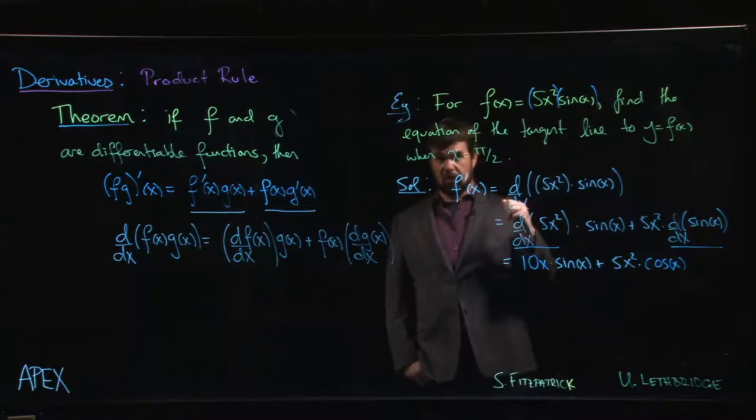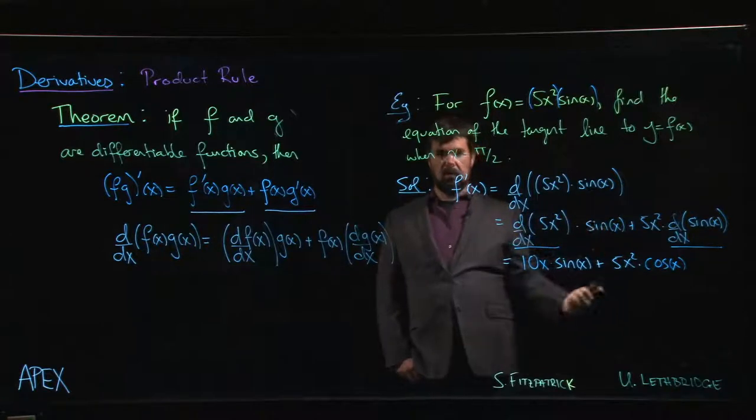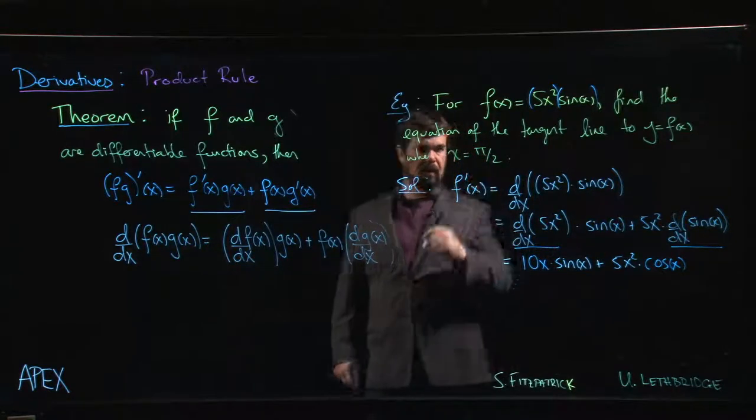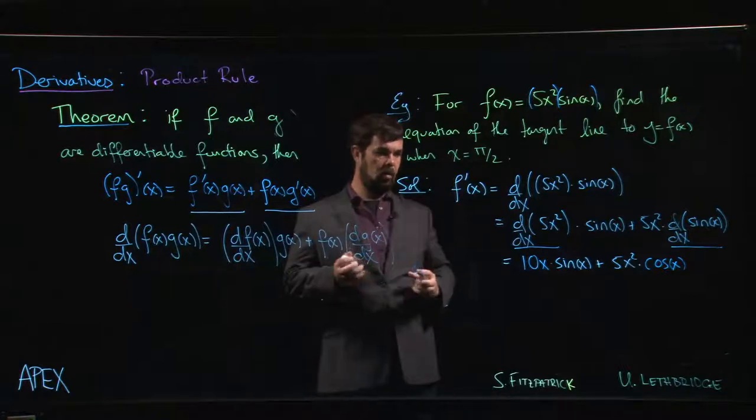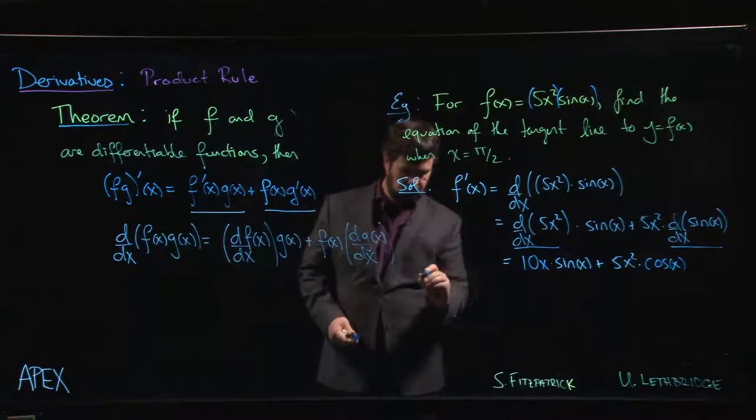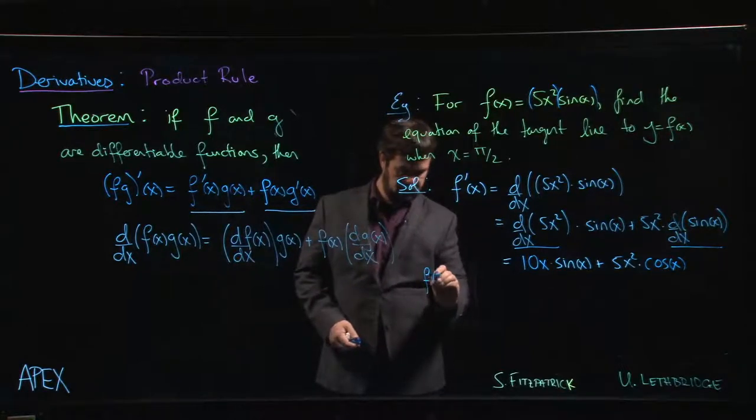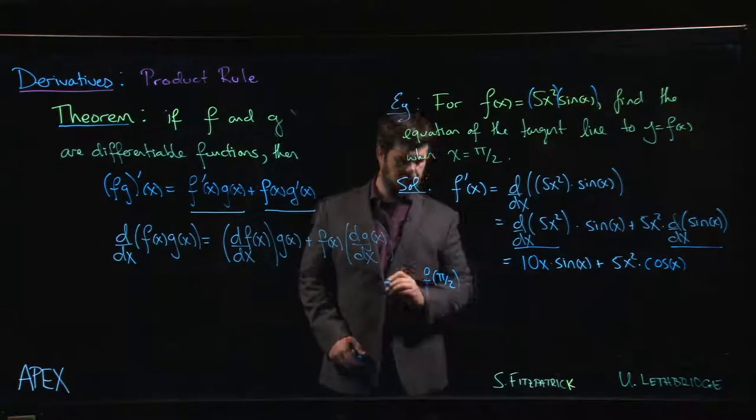All right, so we've got our derivative. We were asked, though, for a tangent line, so we've got to do a little bit more work. For our tangent line, we need our point. We need our slope. So we've got the x-coordinate for the point. We need the y-coordinate. So what is the y-coordinate? The y-coordinate is f at pi over 2.